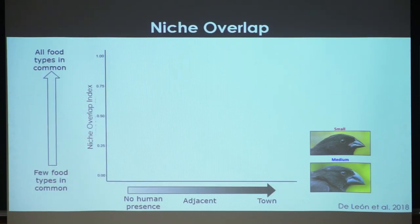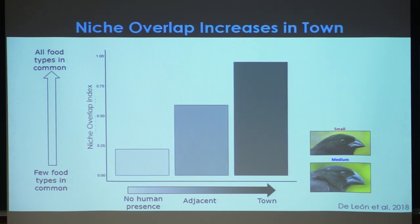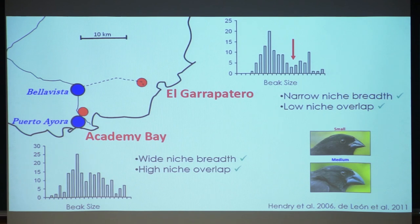When it comes to niche overlap, we found it increases as you get into town. In town the finches are eating the same types of foods and no longer differentiating. So it does appear that we have changed the niche characteristics of the Darwin's finches.